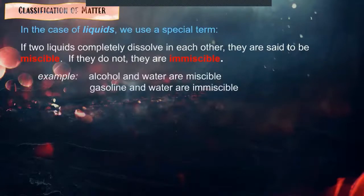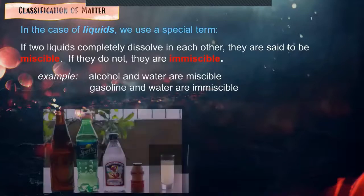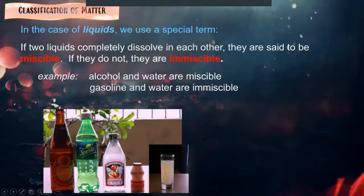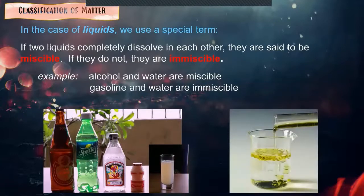In the case of liquids, we use miscible and immiscible. Miscible is two liquids completely dissolved in each other. If they do not, then they are immiscible. Example for miscible: alcohol and water are miscible. And on the illustration, if we combine these substances, they are miscible. Example for immiscible: gasoline and water are immiscible, dili ma-mixed. And on the illustration, we have oil and water, dili yud bud sila ma-mixed.